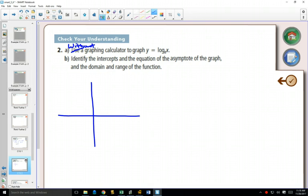What's a point on every single log graph? (0,1) is a point on every single exponential graph. So on a log graph, we always have (1,0).